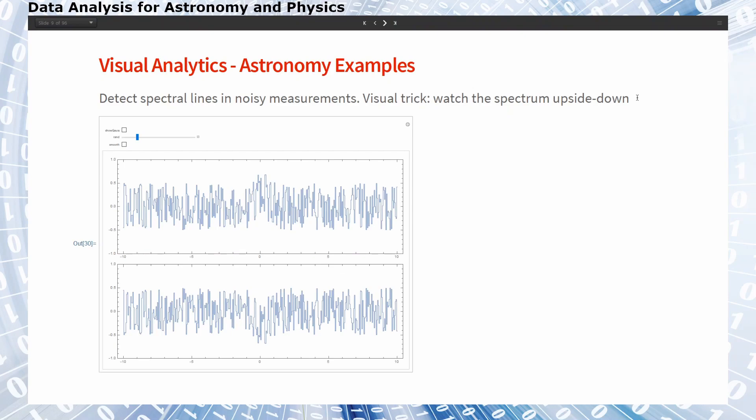Here in the top figure I show you a very noisy signal and one visual trick is to take the same spectrum and turn the sheet upside down to watch the spectrum upside down. And if something that you thought was a spectral emission line is still visible after turning the sheet this is a good indication that it's actually there and not just a trick of your mind.